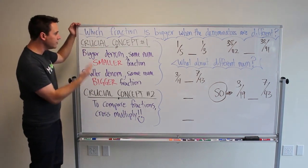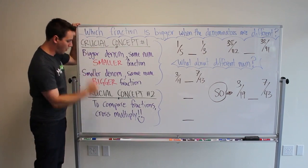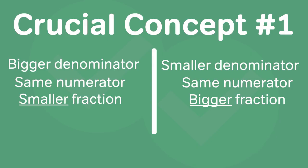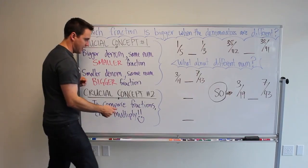Crucial concept number one: a bigger denominator with the same numerator gives you a smaller fraction. And then the inverse is, if you have a smaller denominator with the same numerator, you get a bigger fraction.